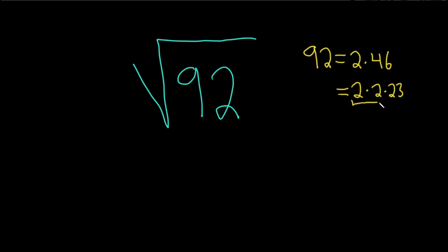And so now you see we can get a 4 out of this. So this is 4 times 23. And that's really useful because 4 is an example of a perfect square. In other words, when we take the square root of 4, we're going to get a whole number of 2.